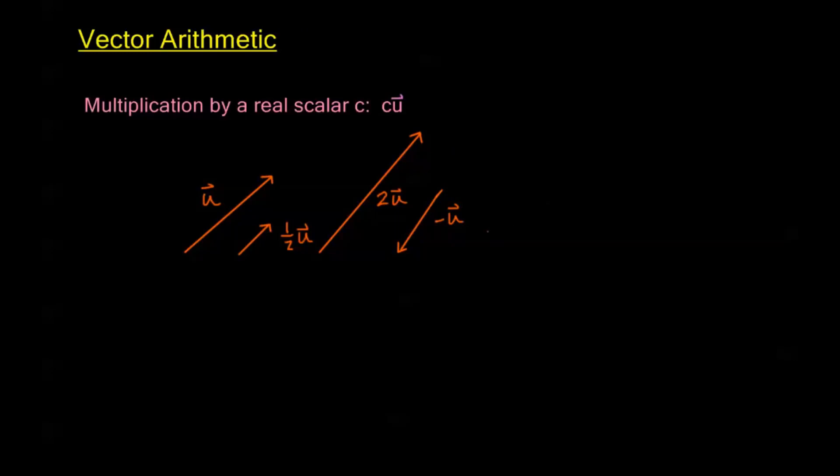And we could have some other numbers other than one as well. If this was my one half u over here that we had, then this vector with the same magnitude as one half u, but in the opposite direction, this would be negative one half u.